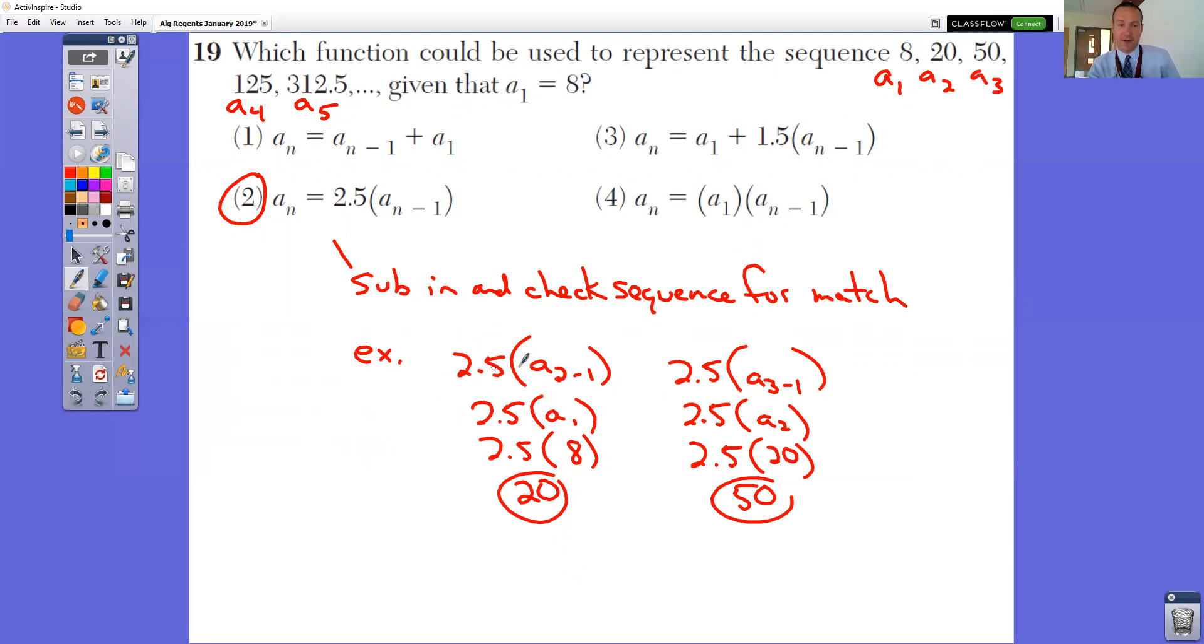For example, if we have 2.5 times the A sub 2 minus 1, the 2 minus 1, our A sub 1 is 8. So 2 minus 1 is 1. So we have A sub 1, that answer is 8. 2.5 times 8, that's 20. When we do the A sub 3, 3 minus 1 is 2. So we have to take our A sub 2 answer, which was the 20, and sub it in right there. 2.5 times 20 is 50. Notice that that is our A sub 3. And we would keep on going. This is the one that matches. That's a hard question, too.